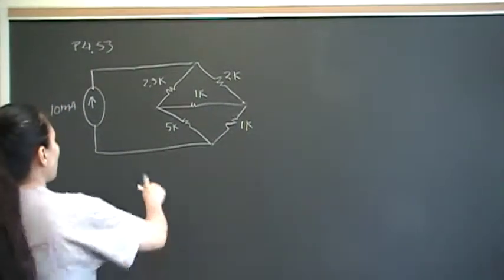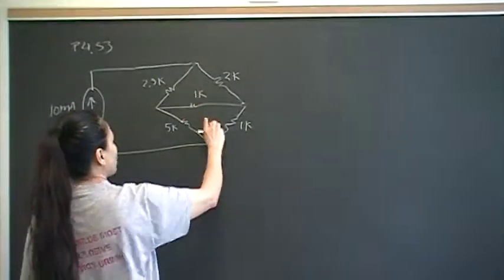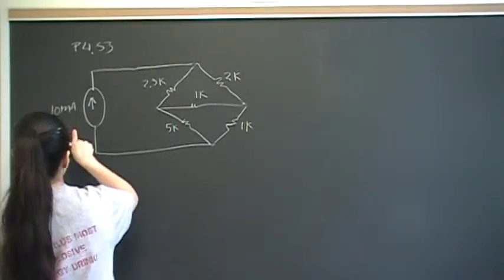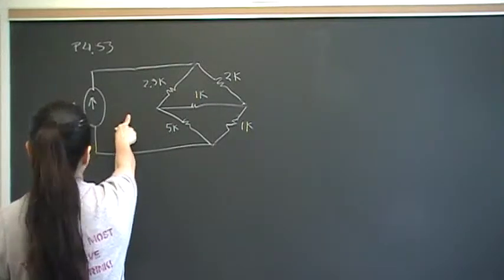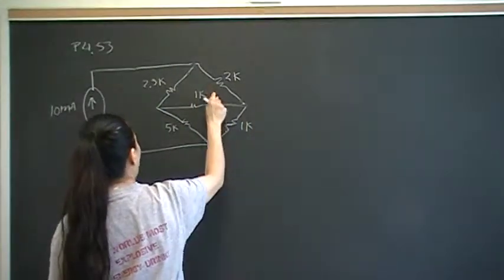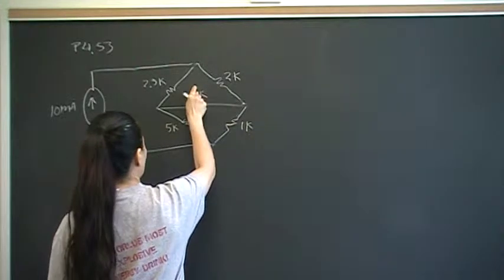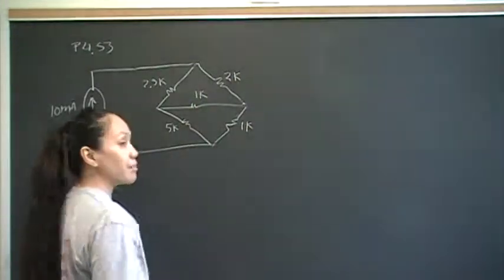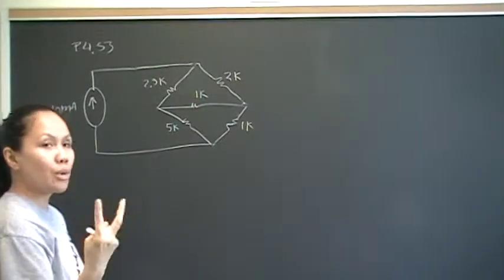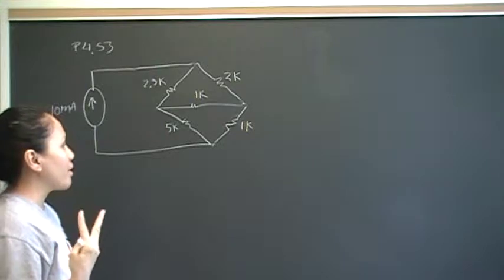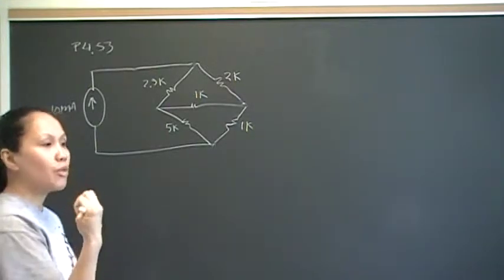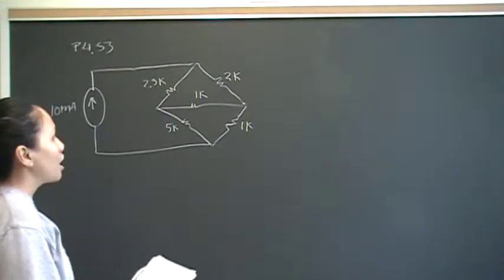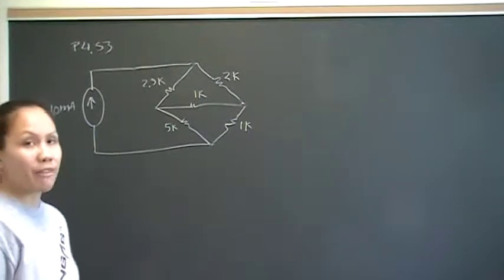If we use the mesh method, we have one mesh, two mesh, and three mesh. One of these meshes we already know the current — the schematic gives it to us: 10 milliamps. We're looking for the power dissipated across the 1k resistor, so we need to find that current and that current. It ends up being two equations, two unknowns. Since the mesh method has two unknowns versus the node method which has three unknowns, we're going to use the mesh. Mesh is more favorable because we have fewer unknowns.